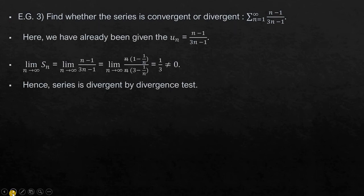So as you can see, we have already been given u_n in form of sigma, and thus the value of u_n is (n-1)/(3n-1). If we plug this value in limit n tending to infinity u_n, we will get the value of the limit equal to 1/3, which is not equal to zero, hence we can conclude that the series is divergent by the divergence test.